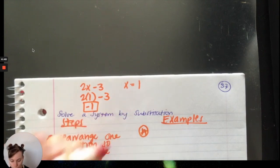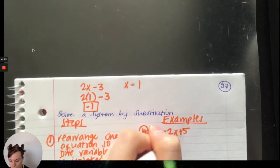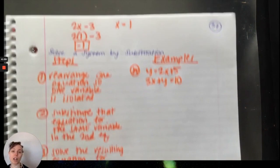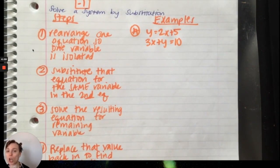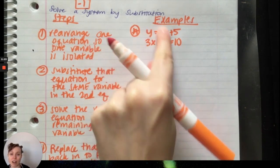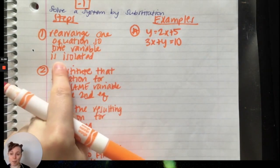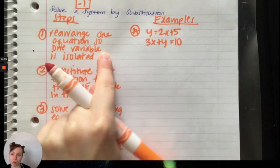We're going to have our first example and this one will be the most straightforward because it's built for this. All of our systems are built for one method over another. All three systems we are working with today's examples could be graphed, totally fine. They could be substituted, totally fine. They could be eliminated, totally fine. But sometimes there is a system that is quicker to do by one method. Figuring out which one's the most efficient is the best thing for you. For this one Y is already by itself. Y is already isolated in this first equation. So I've already done step one.